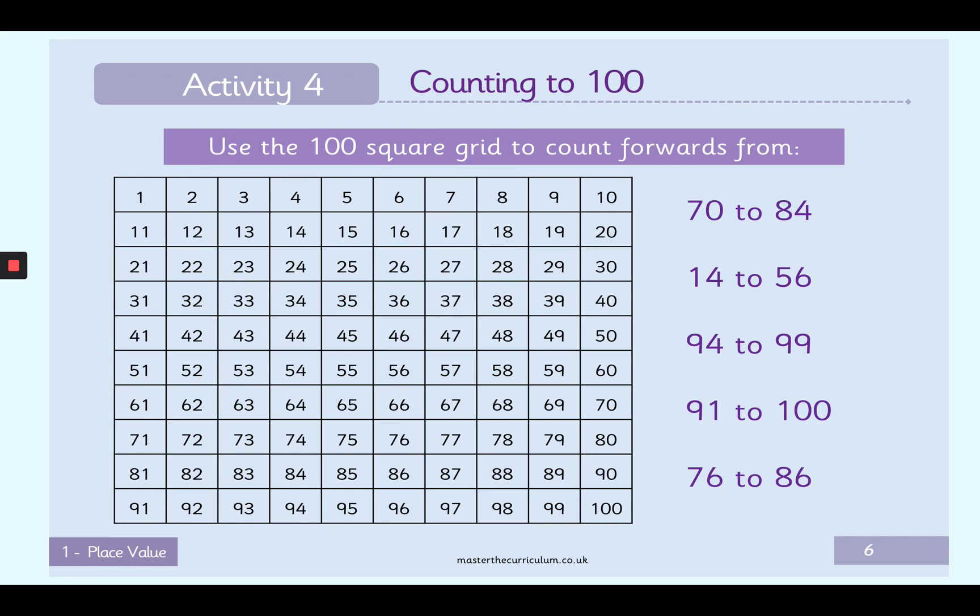Okay, next let's have a look at this 100 square grid. And we have to count forwards from these numbers here to these numbers. So for example, the first one we have to count from the number 70 to the number 84. So quickly try and point to the number 70. Who's going to find it first?